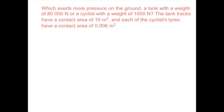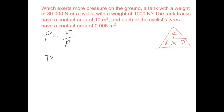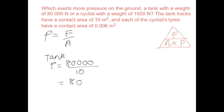Which exerts more pressure on the ground: a tank weighing 80,000 N with a contact area of 10 m², or a cyclist weighing 1000 N with tyre contact area of 0.06 m²? For the tank: pressure = 80,000 ÷ 10 = 8,000 N/m². Now let's compare that to the cyclist's pressure.